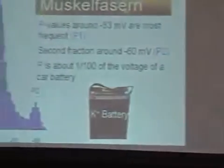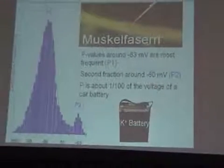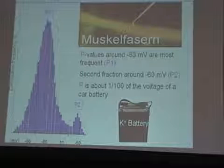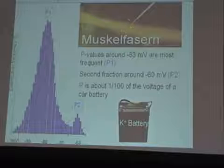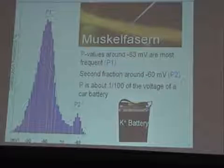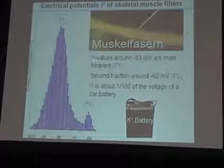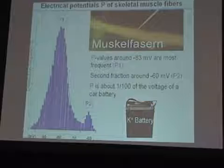For the first part — understanding periodic paralysis — I have to show two physiological slides so that you can understand periodic paralysis. This shows a muscle fiber bundle, with about 20 to 30 single muscle fibers. Here you can see a glass microelectrode, and one of these muscle fibers is impaled by this microelectrode. With the help of this microelectrode and an electrical amplifier, we can measure the electrical potential of this skeletal muscle fiber. These P values — P stands for potential — are around minus 83 millivolts.